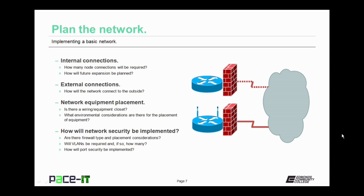You also need to consider external connections — how will the network connect to the outside? Where will the WAN connection come into your building, and where will your equipment be placed so that it can reach those WAN connections? That is part of the network equipment placement plan. Part of that plan also needs to consider whether there is a wiring or equipment closet and where it will be located. If you do have an equipment closet, consider environmental factors: is it too hot, too cold, too humid, or too dry? You need to think about those things when placing your network equipment.